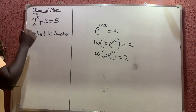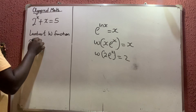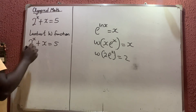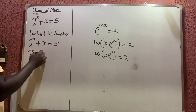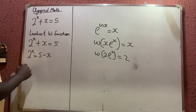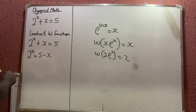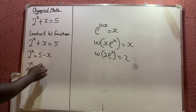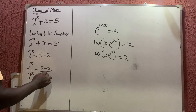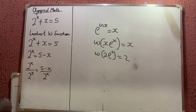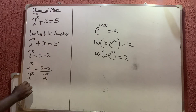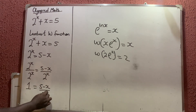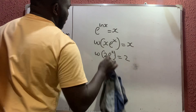Now let us solve this. The problem is 2 raised to the power x plus x is equal to 5. Taking x to the other side, I have that 2 raised to the power x is equal to 5 minus x. Dividing both sides by 2 raised to the power x gives 1 equals 5 minus x over 2 raised to the power x.